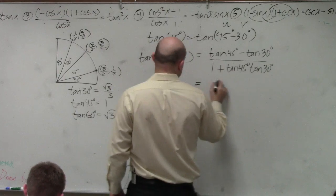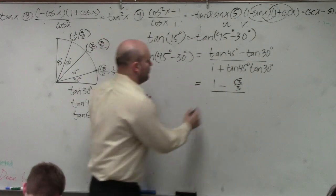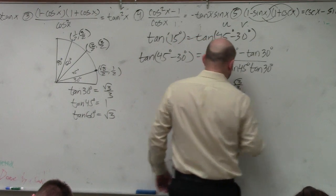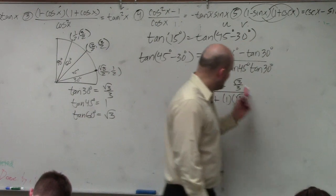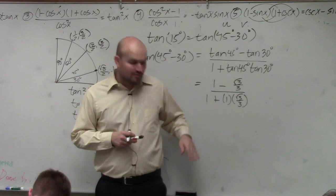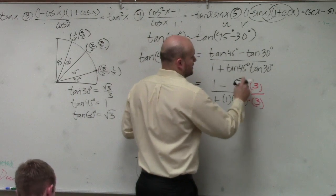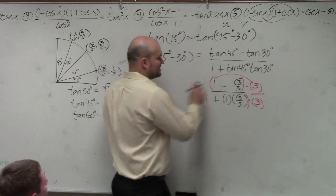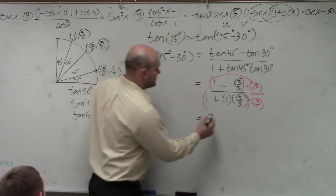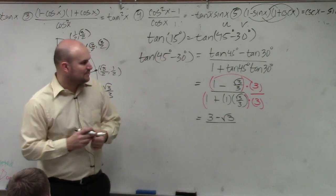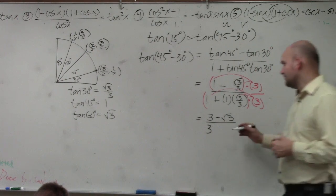So tangent of 45 degrees — now I can just plug in the answers. That's 1 minus square root of 3 over 3, divided by 1 plus tangent of 45 degrees times square root of 3 over 3. That's not simplified though, so now we need to simplify it. We have fractions in the numerator and fractions in the denominator. First thing we'll do is get rid of those fractions by multiplying by 3 over 3 in each numerator and denominator. So 3 times 1 gives 3, and 3 times negative square root of 3 over 3 — the 3's divide out — leaves negative square root of 3. Over 3 times 1 is 3, and 3 times positive square root of 3 over 3 is plus square root of 3.